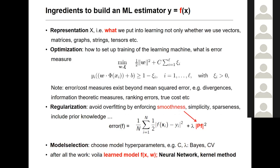I'll start by assuming you're familiar with machine learning, but I'll go through the things you need to build a machine learning estimator F of X predicting some Y. The first thing is knowing what you put into the learning — this could be vectors, strings, graphs, tensors, whatever you have. Most of the time, the application tells you what the data is about.